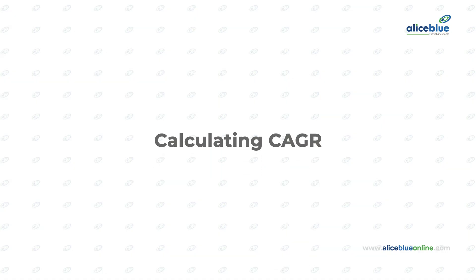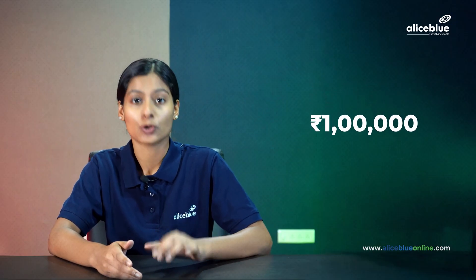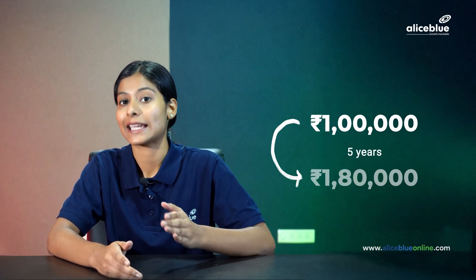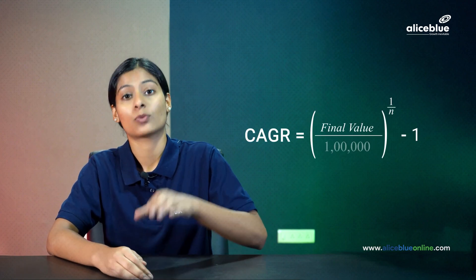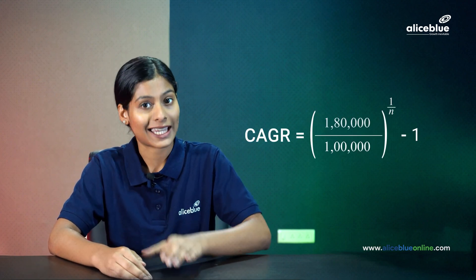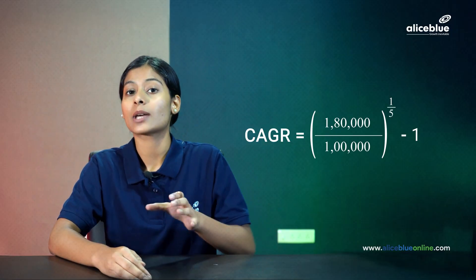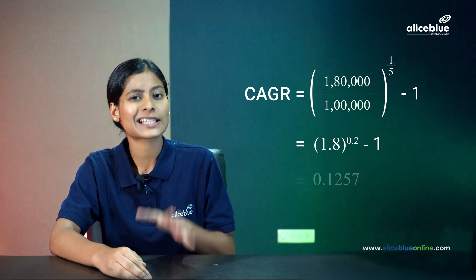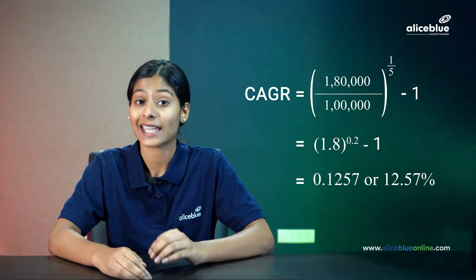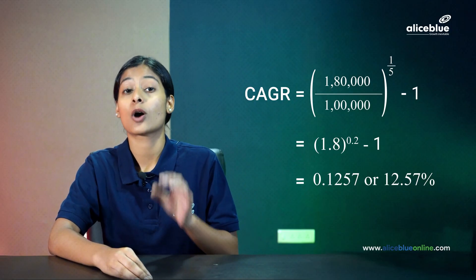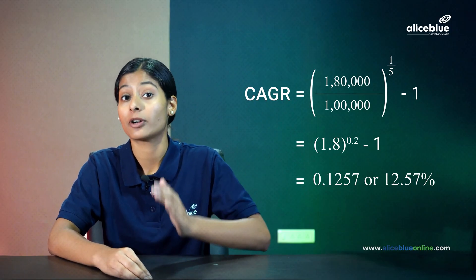To calculate CAGR, let's take an example. Suppose you invested 1 lakh in a mutual fund. After five years, it grew to 1 lakh 80,000. If you use the CAGR formula with the initial value as 1 lakh, final value as 1 lakh 80,000, and number of years as 5, we end up with a CAGR of approximately 12.57%. Hence, your investment grew at an average rate of 12.57% per year.